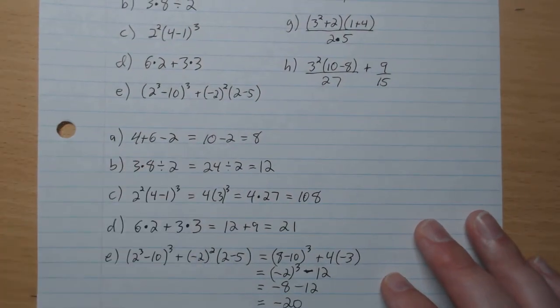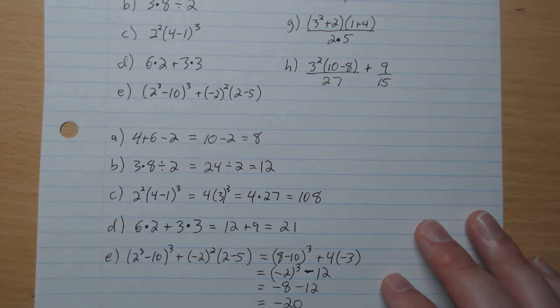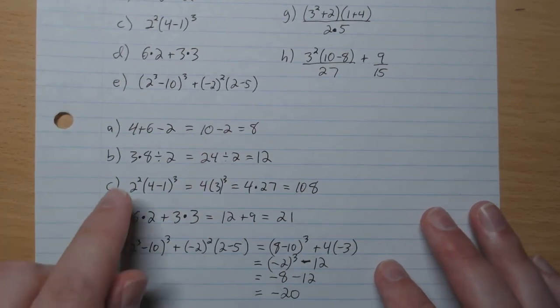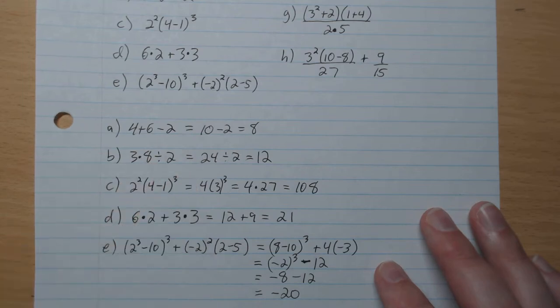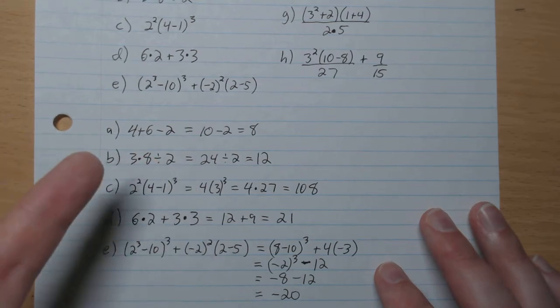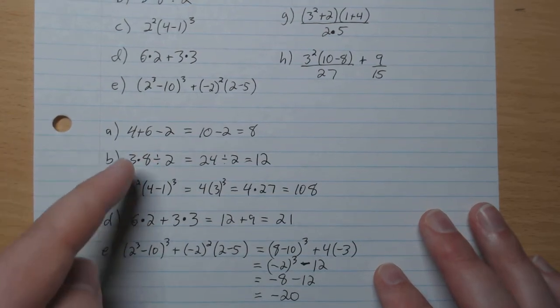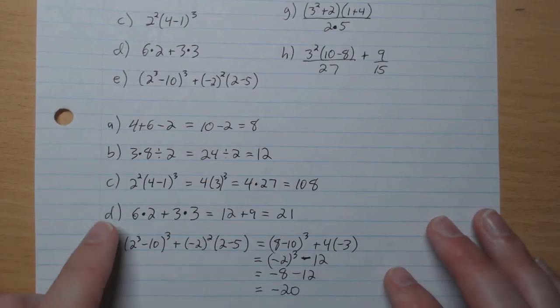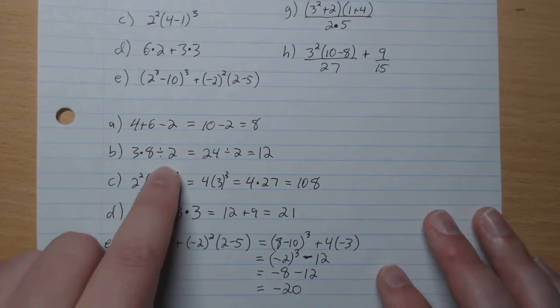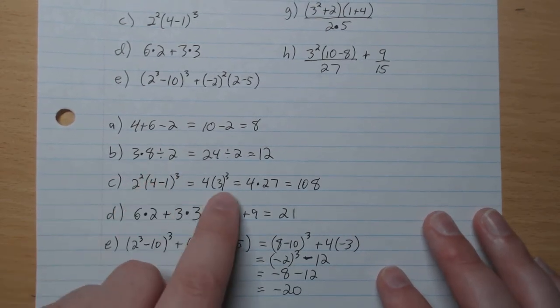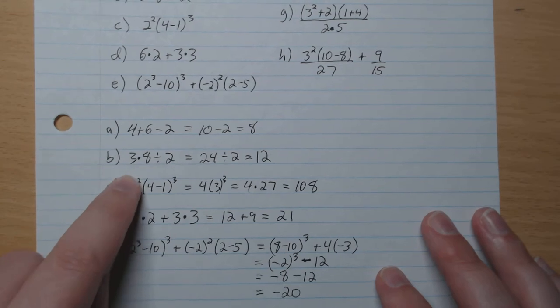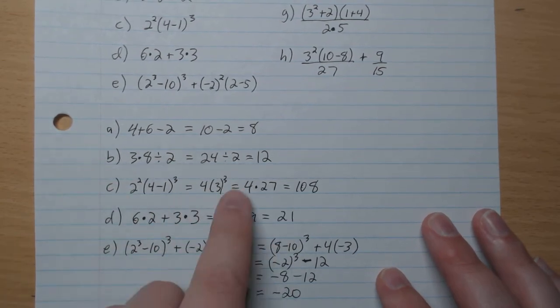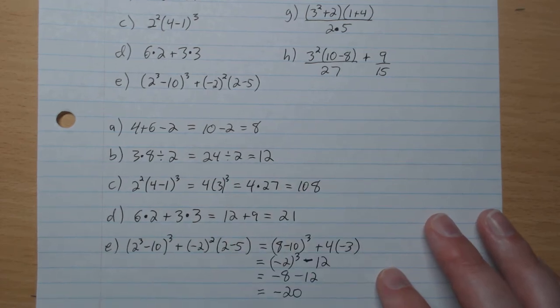A. 4 plus 6 minus 2. So we just read it left to right. So we got 10 minus 2, 8. B. 3 times 8 divided by 2. With the bracket and division, none of them comes first. You go left to right. So 24 divided by 2, which gives 12. C. Inside the brackets goes first. So that's 3 cubed. 2 squared is 4. 3 cubed is 27. 4 times 27, 108.